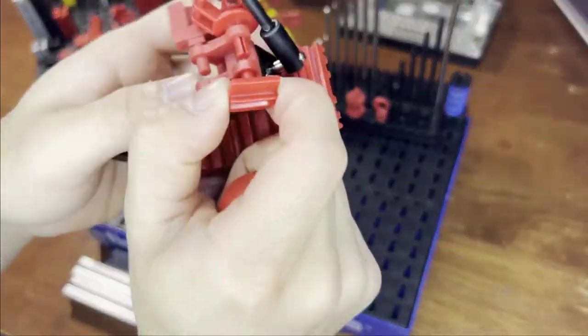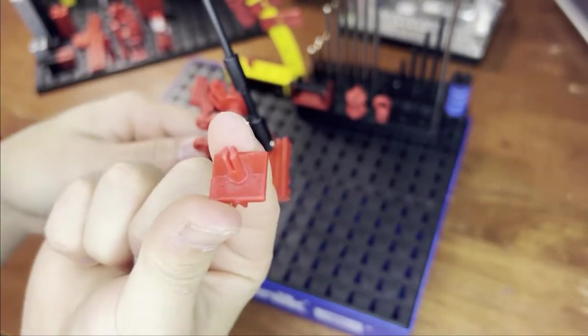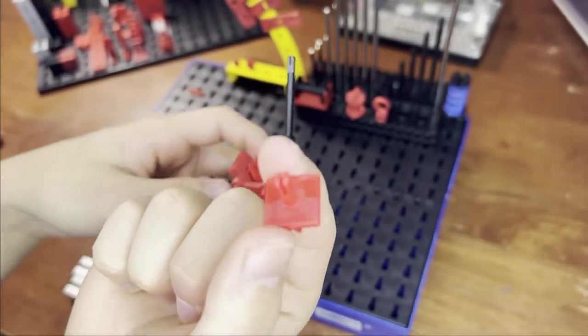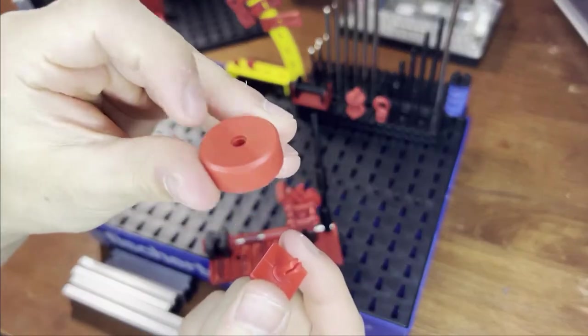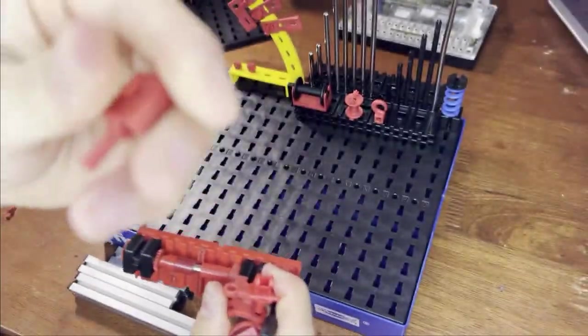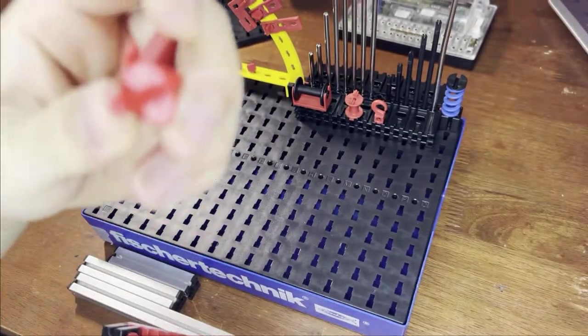Last thing I want to mention are these parts right here that have this clip at the end. These are actually axles for the wheels. And so a wheel like this can clip on and spin freely, similar with this part and this part.